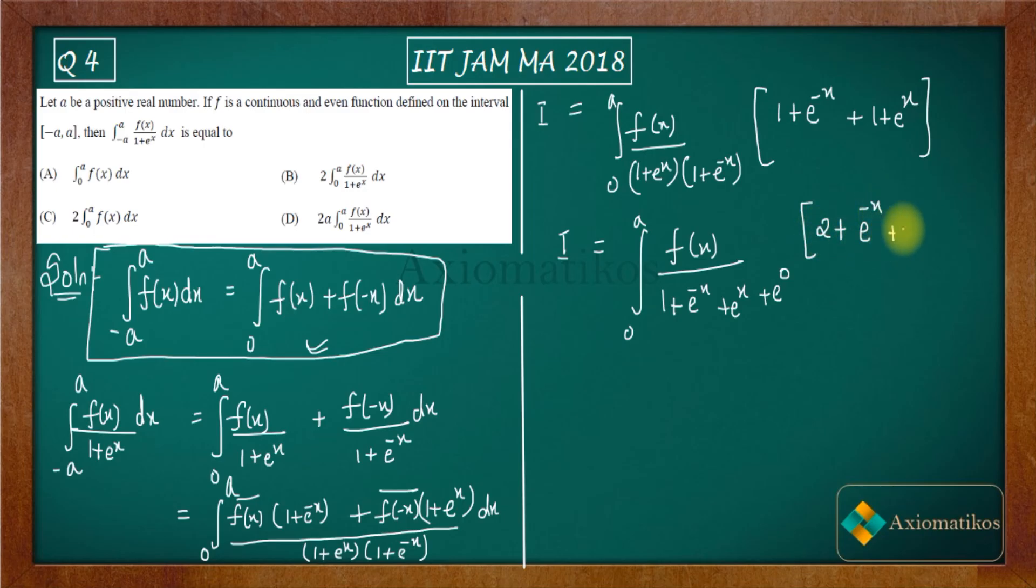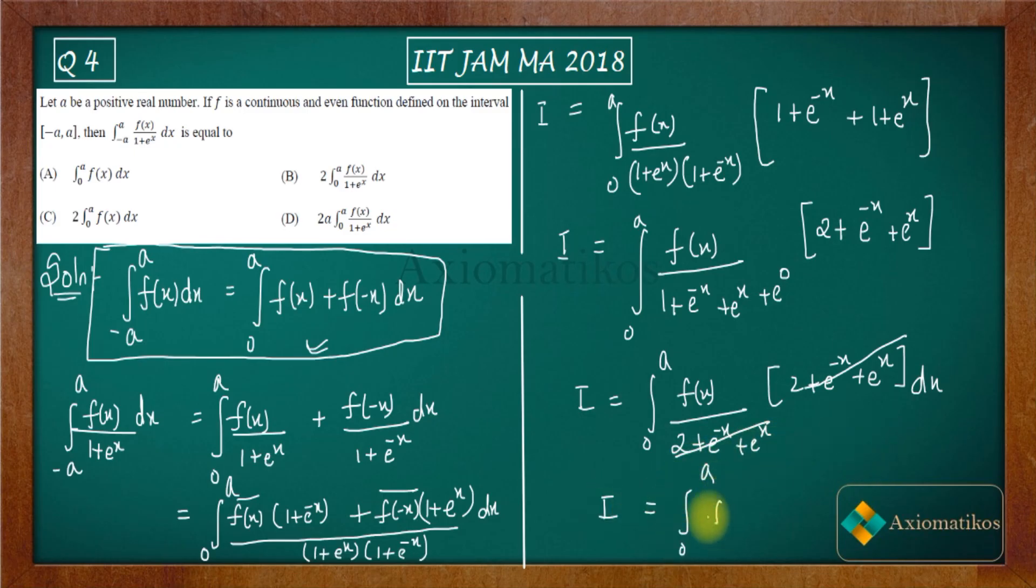This integral can be cancelled by this integral. Are you getting my point or not? So finally what you are getting is zero to a f(x) dx. That means your correct option is this option number a. So a is correct, b is incorrect, c is incorrect, d is incorrect.